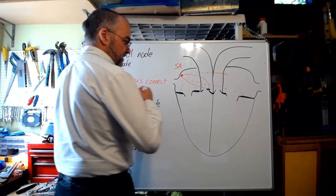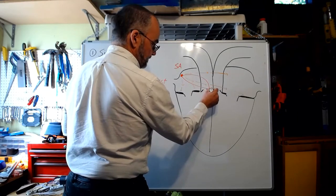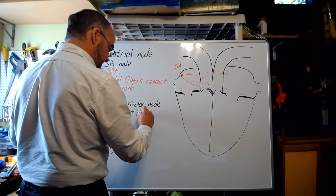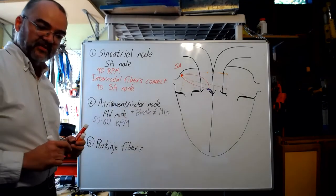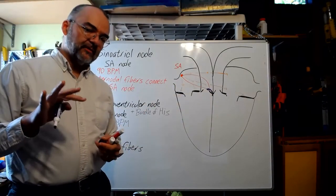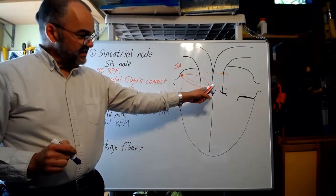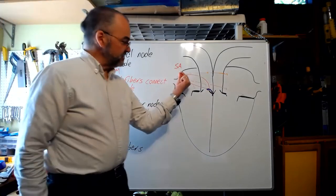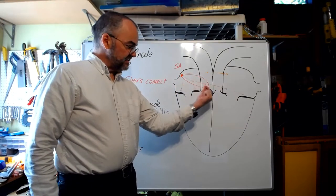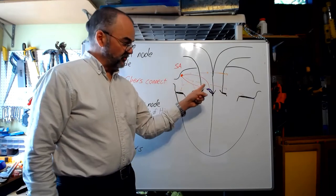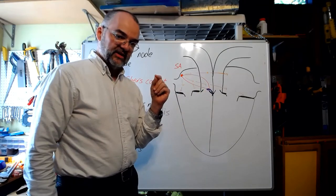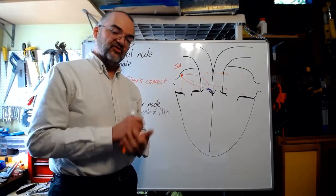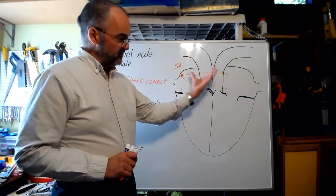The AV node has a tail called the bundle of His, which punches through the base of the heart and is really part of the AV node. The AV node and bundle of His delay the action potential — while it spreads very quickly down the internodal fibers and triggers the AV node, it then works its way through the AV node and bundle of His very slowly. This holds the signal and delays it, allowing it to move through only while the atria complete their contraction.